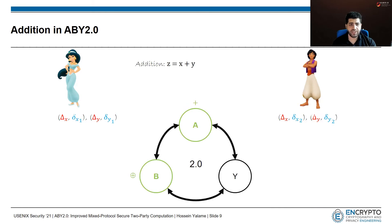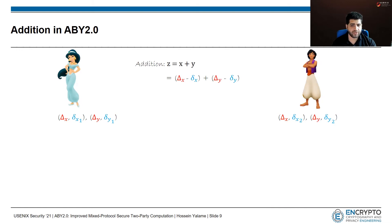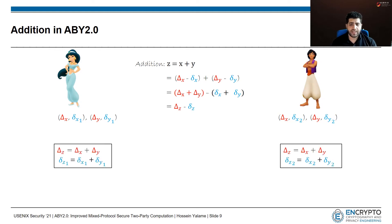The addition operation is local in ABY2. Values X and Y can be written in terms of their masks and masked values. Upon rearranging, the parties can add up their shares corresponding to X and Y to get the share of Z. Here we can see that delta_Z, delta_Z1, and delta_Z2 can be calculated locally.